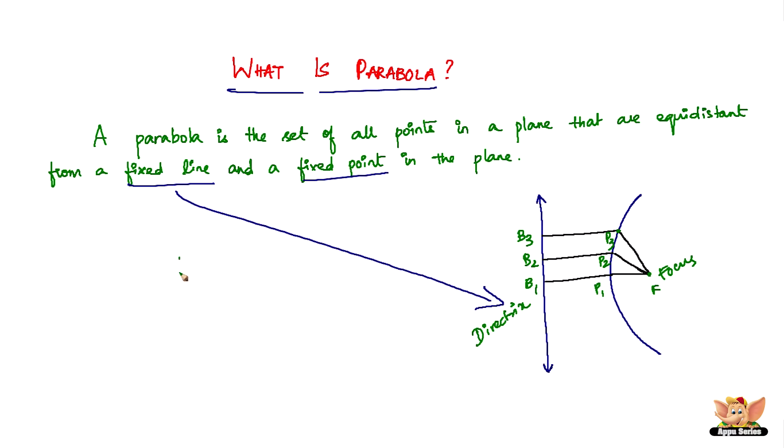P3B3 equals P3F. And in a similar way, this point here - I mean the distance between P2 and B2 is equal to the distance between P2 and F, so P2B2 equals P2F. So again here, if you see the point P1, the distance between point P1 - of course this is not